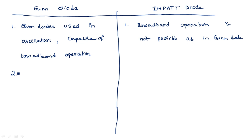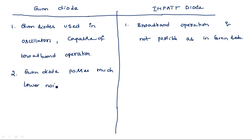Second difference: Gunn diodes possess much lower noise. Coming to the IMPATT diode, they are having more noise. This was explained when covering the IMPATT diode individually.